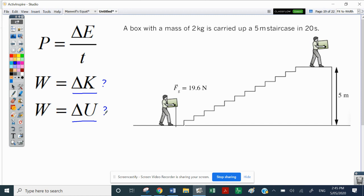So we're assuming he's just going walking up there at a constant velocity. So we are not changing any kinetic energy, we will be changing gravitational potential energy. So let's calculate the change in U. So delta U is equal to MG delta H. So the mass is two kilograms times by G, which is 9.8,